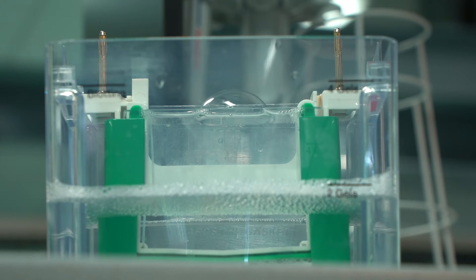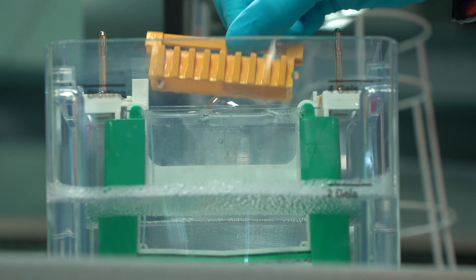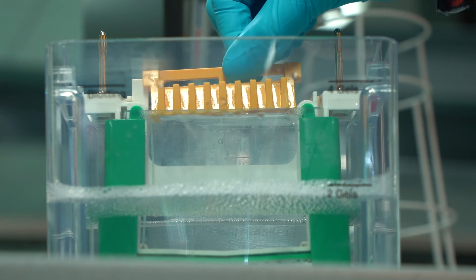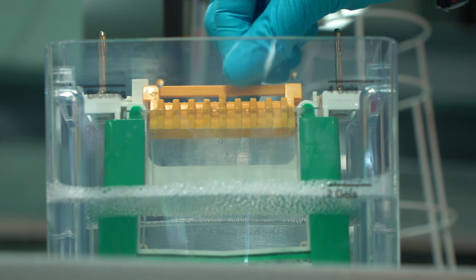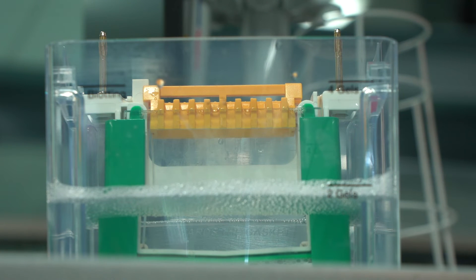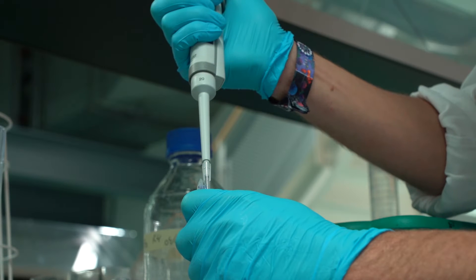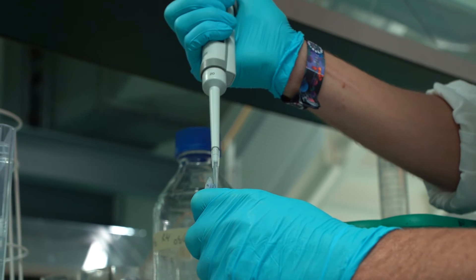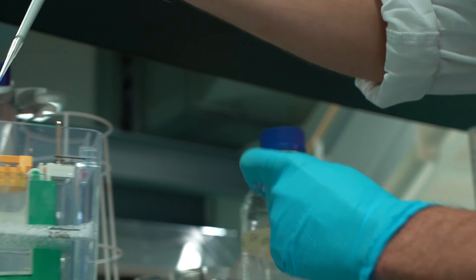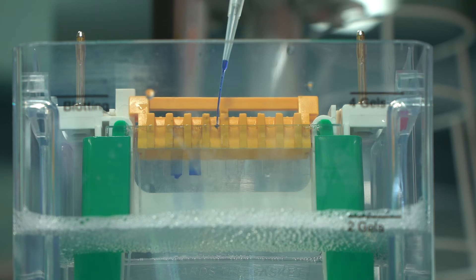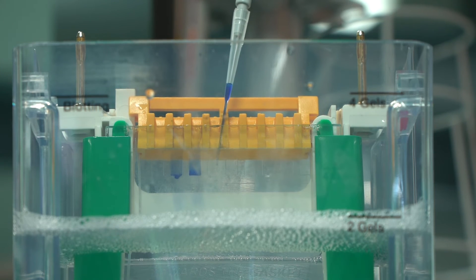For each sample, you must load a minimum of 5 microliters and a maximum of 20 microliters per well. Pipette the sample into the well and pay attention that the sample does not overflow into other wells. You can use the pipette to help you get the sample into the wells. Place a protein ladder next to the samples by pipetting 5 microliters into one well.